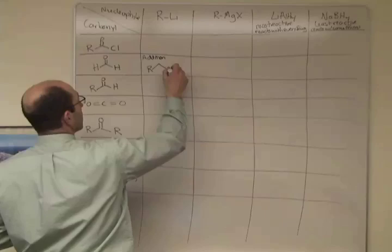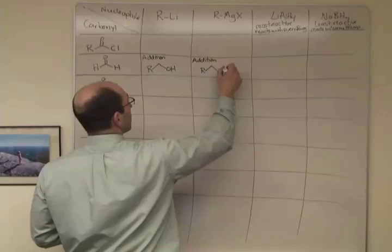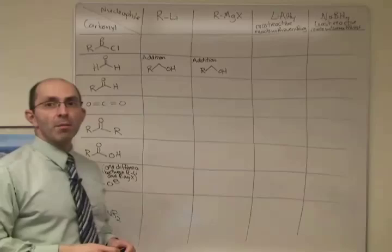And that would give us a primary alcohol. And Grignard would do exactly the same thing. So that would be an addition reaction and the product would be a primary alcohol. And so your goal is to fill out this entire table.